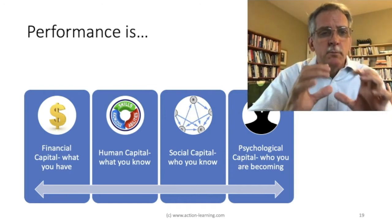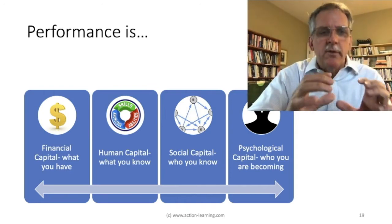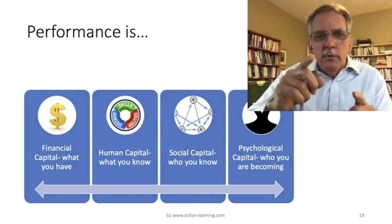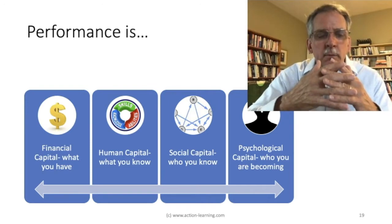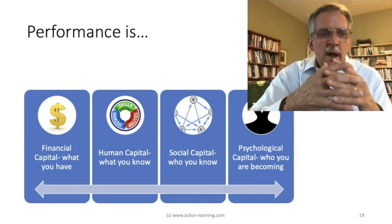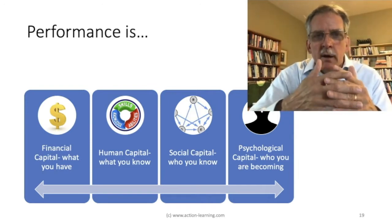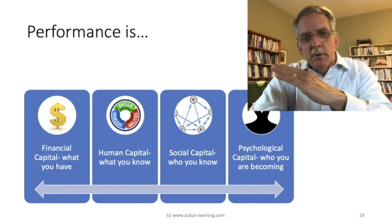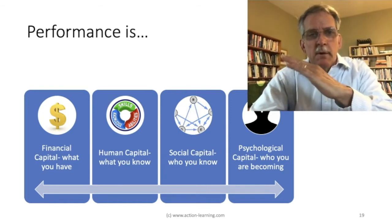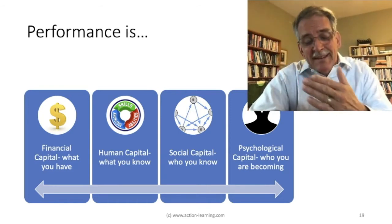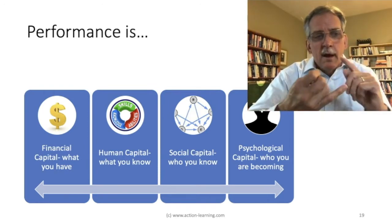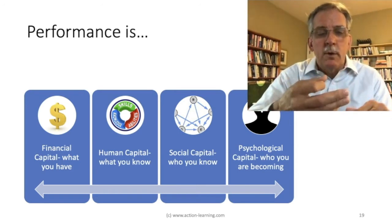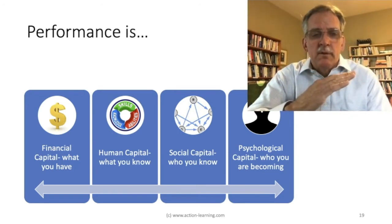We also sometimes measure social capital — who do you know, and that network is represented in the image there. Social capital, human capital, and financial capital are critical, and they're finite. They're resource-based views of capital. In the last 5% of my life, I'm going to spend everything I know I have on health care, I'm going to forget what I know, and I'm going to forget who I know — because they're resource-based views.